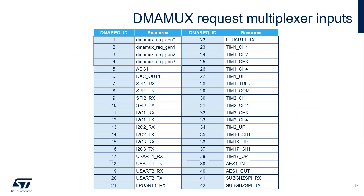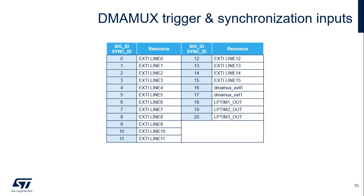The table shows the STM32-WL5 mapping of the DMA-MUX request multiplexer inputs for any channel. Assigning a request input is programmed by the DMA-REQ-ID for any DMA-MUX request multiplexer channel or DMA-MUX CXCR register. The same request input must not be mapped to two different channels. This table shows the STM32-WL5 mapping of the trigger inputs and synchronization inputs for any channel. Assigning a trigger input is programmed by the SIG-ID field of any DMA-MUX request generator or DMA-MUX RGX-CR register. Assigning a synchronization input is programmed by the SIG-ID field of any DMA-MUX request multiplexer channel or DMA-MUX CX-CR register.